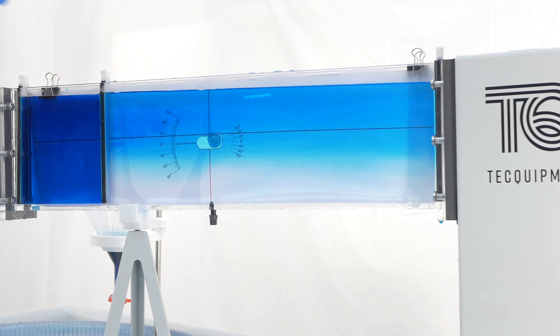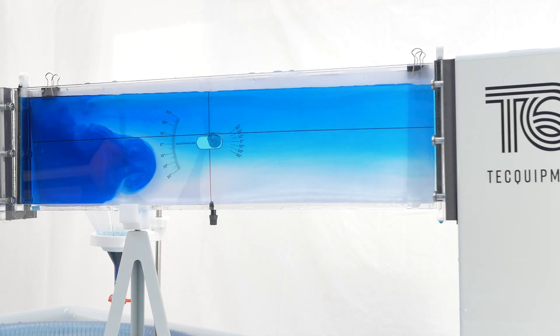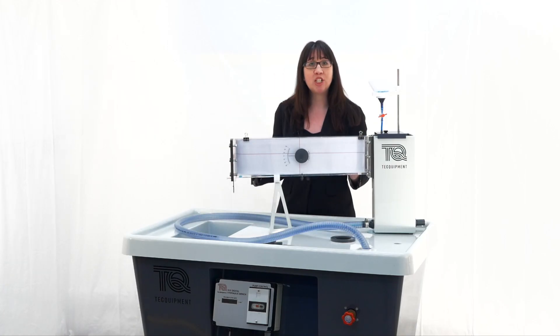To improve the visibility of the experiments, we will be supplying a white backdrop that can be hung on the reverse of the channel. As you can see, it makes it easier to see the streamlines, but alternatively, this can be removed for a large group of students viewing from both sides of the experiment.